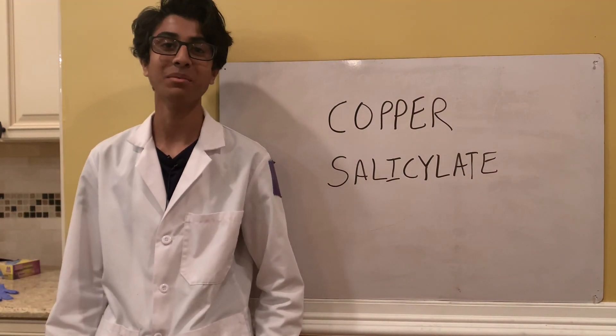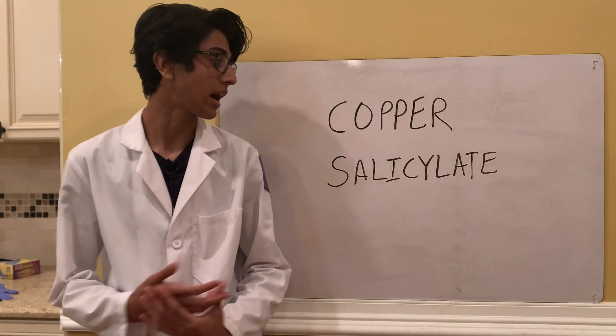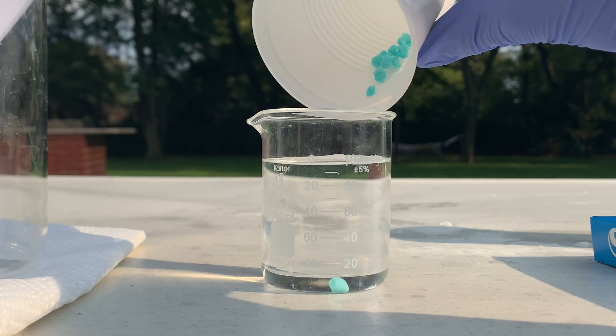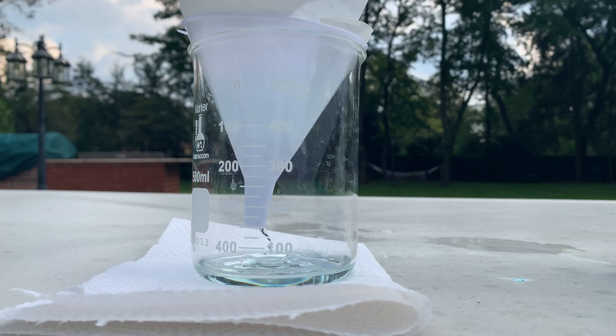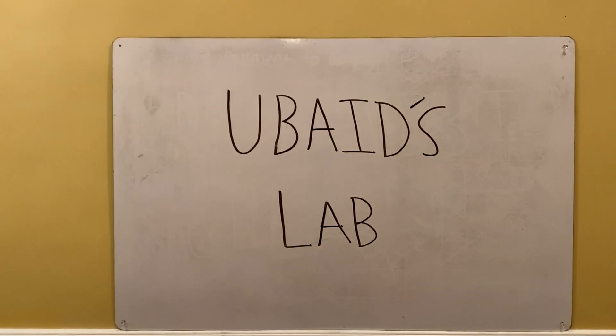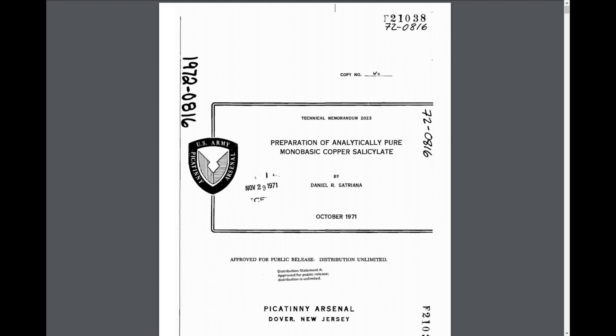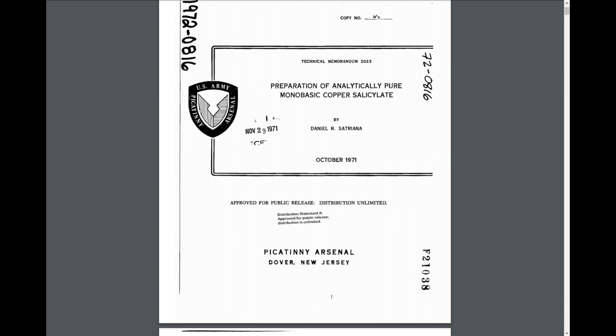Welcome back to Ubad's Lab and today we're going to be making copper salicylate. I got the idea and all the information I need for the synthesis from a research paper called 'The Preparation of Analytically Pure Monobasic Copper Salicylate' by Daniel Satriana in 1971. This paper goes through everything I need to know about the procedure of making copper salicylate and also goes into some of the physical analysis.